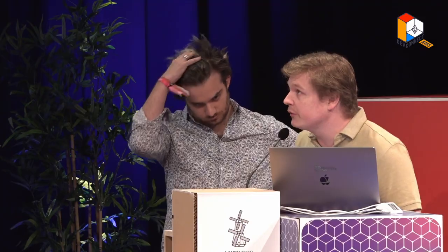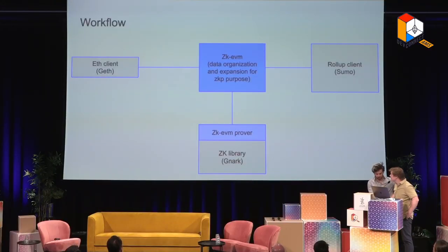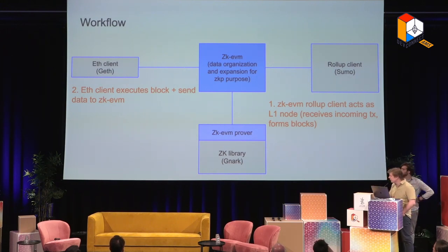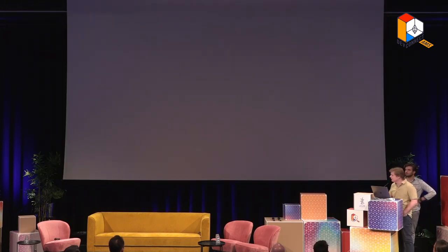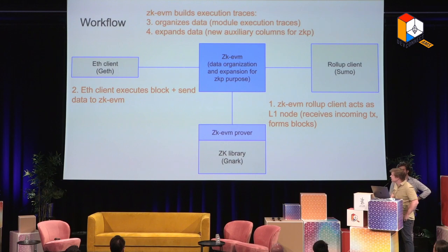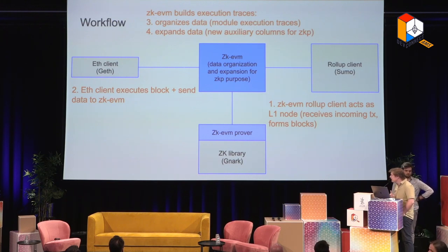Here's how we envision the workflow of our ZK EVM. There's going to be a ZK EVM client acting pretty much like a layer-one node, receiving transactions and forming blocks. The blocks are then sent to an execution engine — in our case, Geth — which executes a block and sends data generated along the path to the ZK EVM. The ZK EVM is tasked with forming the execution traces, which means first organizing the data using our modular architecture, and second expanding the data, since only a tiny minority of the data in the ZK EVM is obtained from the client directly.